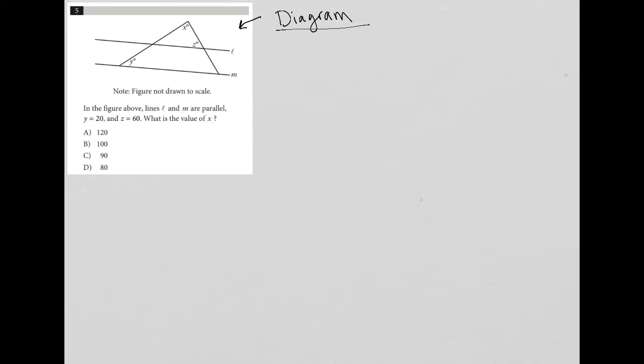The question says in the figure above lines L and M are parallel. That's very valuable to know. That tells me that if the lines are parallel, that means this is also Y degrees. This is also Z degrees because of corresponding angles.